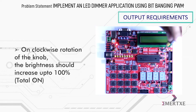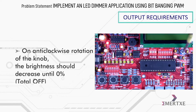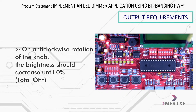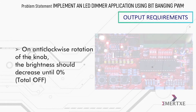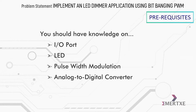On clockwise rotation of the knob, the brightness should increase up to 100%. On anti-clockwise rotation of the knob, the brightness should decrease until 0%. You should have knowledge on input-output port, LED, pulse width modulation, and analog to digital converter.